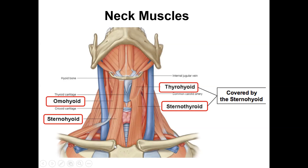We also have the sternohyoid, which inserts on the sternum and originates from the hyoid bone. If we strip those two layers away in a deeper dissection, we can see the thyrohyoid muscle inserting on the inferior aspect of the thyroid cartilage and originating from the hyoid bone. And then lastly, the sternothyroid muscle, inserting on the sternum and originating from the inferior aspect of the thyroid cartilage. So: omohyoid, sternohyoid, thyrohyoid — which is a much smaller muscle — and sternothyroid. Note that thyrohyoid and sternothyroid are deeper to omohyoid and sternohyoid.